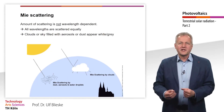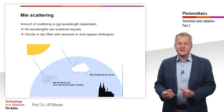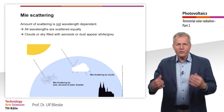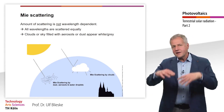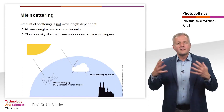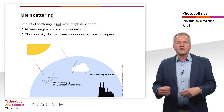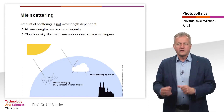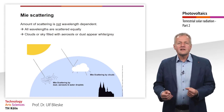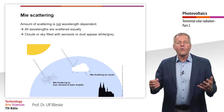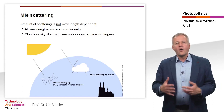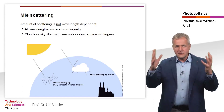Mie scattering is much simpler. In this case, the amount of scattering is almost not wavelength-dependent. Mie scattering can occur in clouds and also by dust, aerosols, and water droplets which we cannot see. Both lead to the effect that we see a white or grey sky, as all wavelengths are scattered equally.